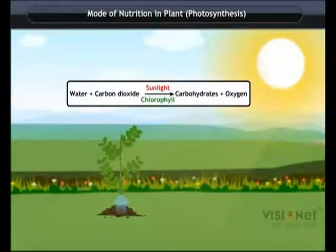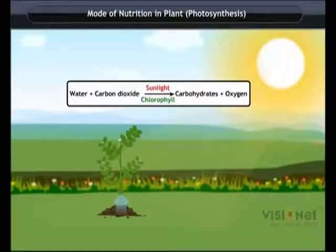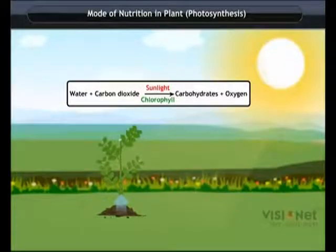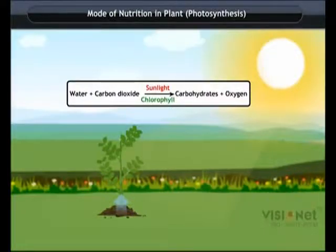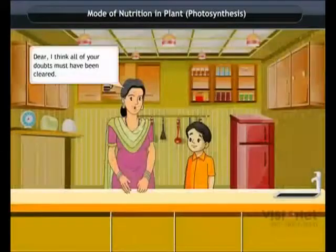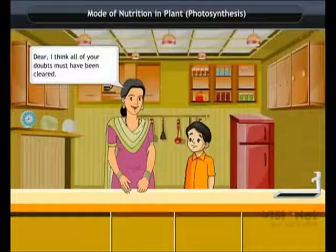The process of photosynthesis can be represented as an equation: water and carbon dioxide, in the presence of sunlight and chlorophyll, gives carbohydrates and oxygen. I think all your doubts must have been cleared.